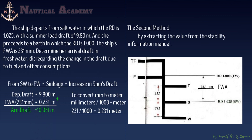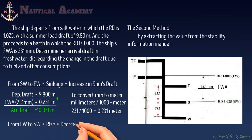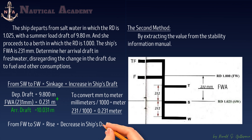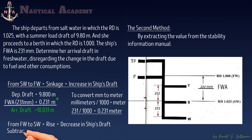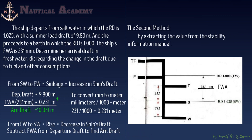If the ship departs from freshwater and proceeds to saltwater, the ship will rise and the effect will be a decrease in draft. So subtract the freshwater allowance from the departure draft to find the arrival draft.